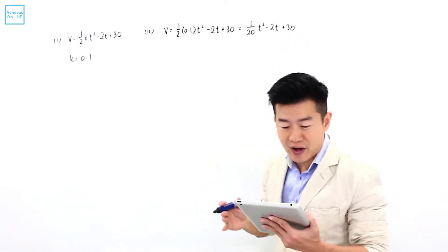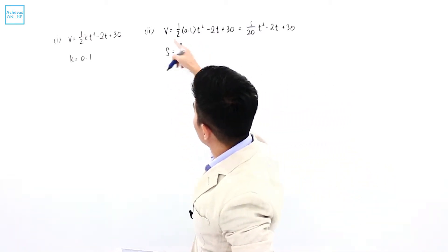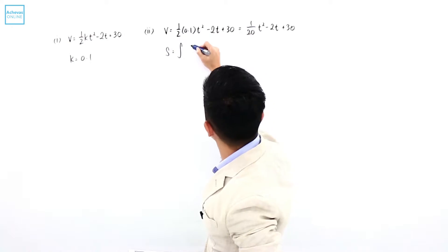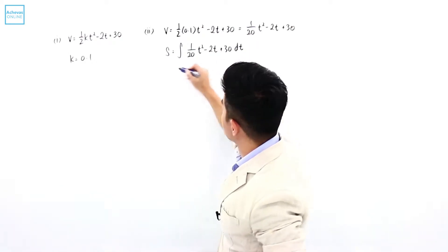What we want to do now is to find the displacement. Displacement is the integration of the velocity. So it is integration of 1 over 20 t squared minus 2t plus 30 dt.